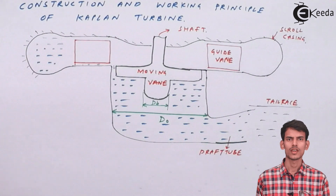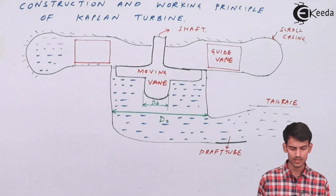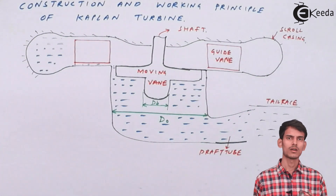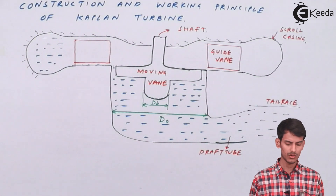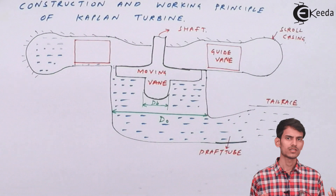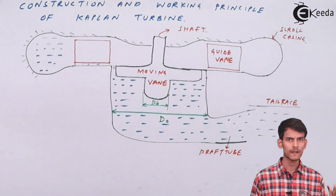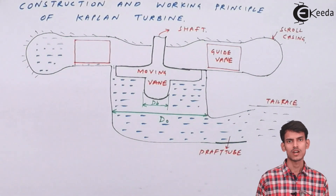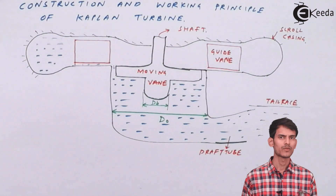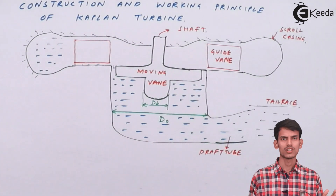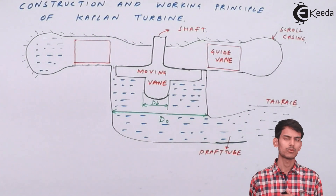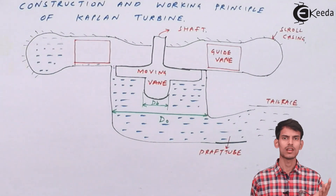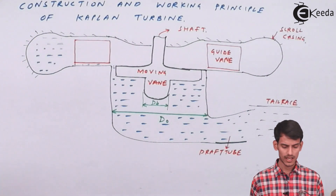As you can see, there is a scroll casing into which the water enters. After entering the scroll casing, it flows over the guide vanes, and after passing the guide vanes it enters the moving vanes where the propeller starts rotating. This creates energy which is transferred to the shaft, generating power. The water coming out of the propeller then goes to the draft tube and finally enters the tail race.